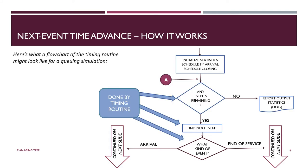We're going to take a couple of minutes here and look under the hood. Not everyone is a programmer, not everyone wants to look under the hood — you may want to just go find the nearest service facility. But we'll take a quick look at what the timing routine does and how it works. If you look at the flowchart coming in from the beginning of the program, the first thing you see is that the statistics we're collecting have to be initialized and two events are scheduled before even getting into the timing routine.